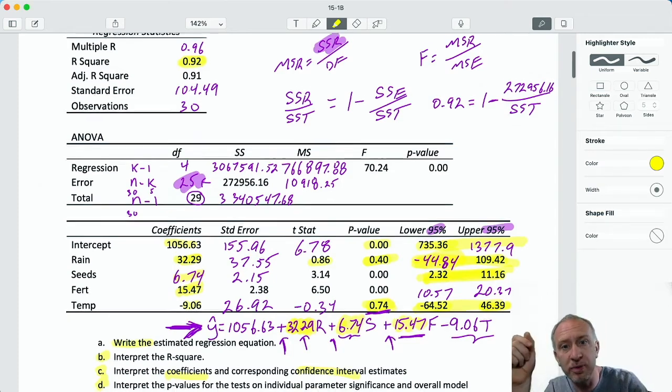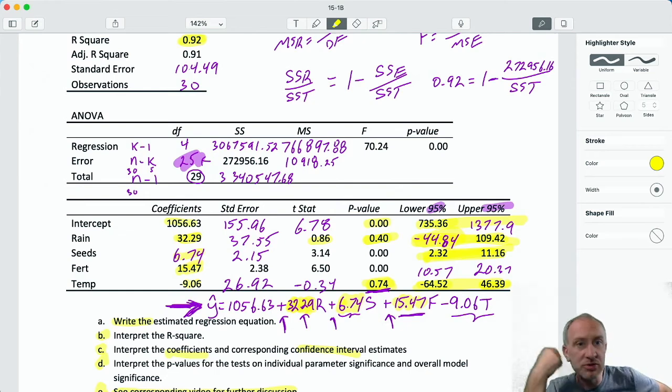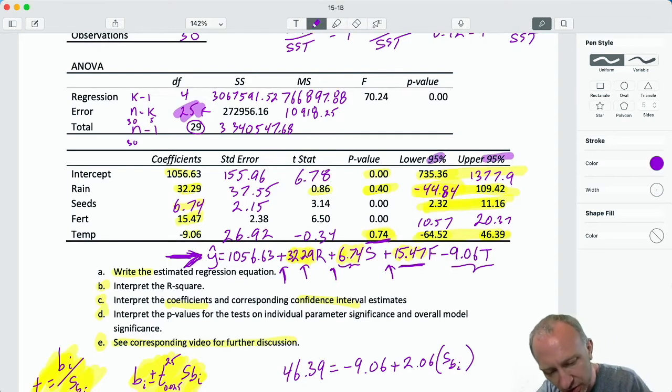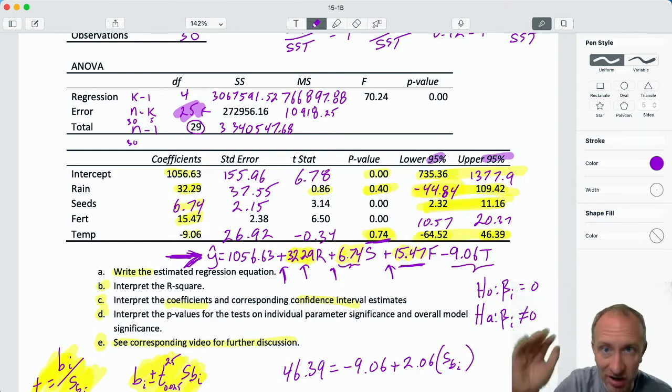So when we go into part D, interpret the p-values, well, we've already done a little bit of that in our interpretation of the intervals. What I would do here for this type of a problem if this is on an exam, again, I try to avoid going through every single one of these, especially on an exam, you might have time constraints, and that can be very tedious. You don't want to be spending time writing this null and alternative hypotheses.